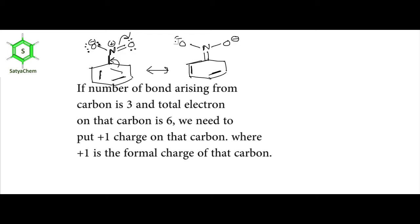The O minus groups appear as the pi electrons move onto oxygen, forming a new lone pair. The number of bonds arising from nitrogen remains four, so we again put a positive charge on nitrogen. For the carbon where the double bond has moved, since we have not shown the hydrogen, the number of bonds from that carbon appears as three — considering the hidden C-H bond — so we put a positive charge on that carbon.